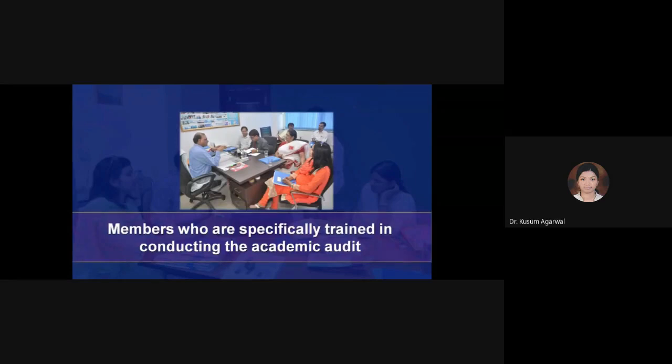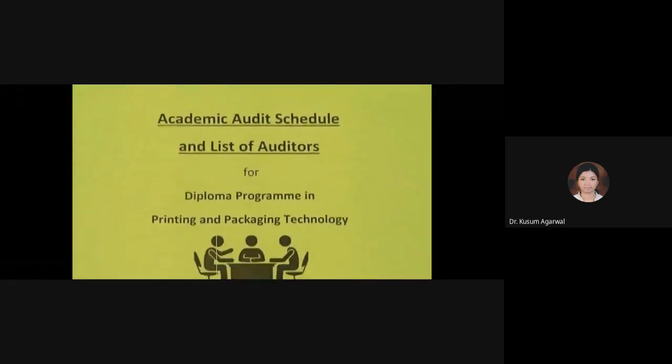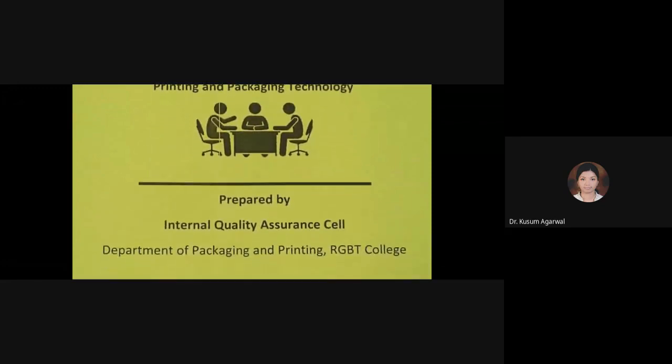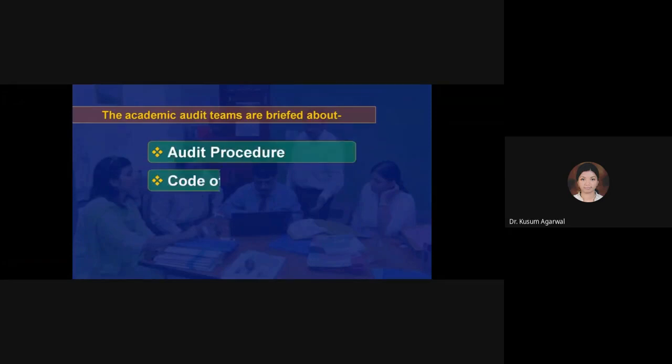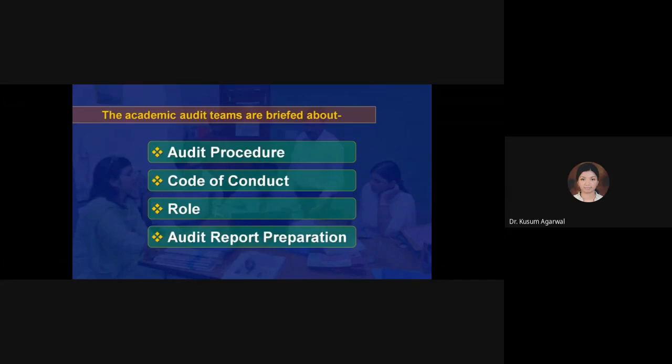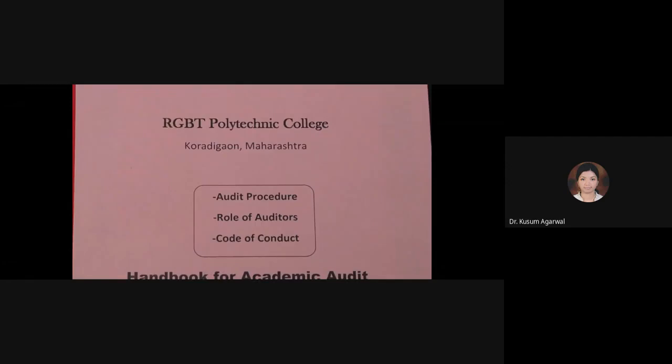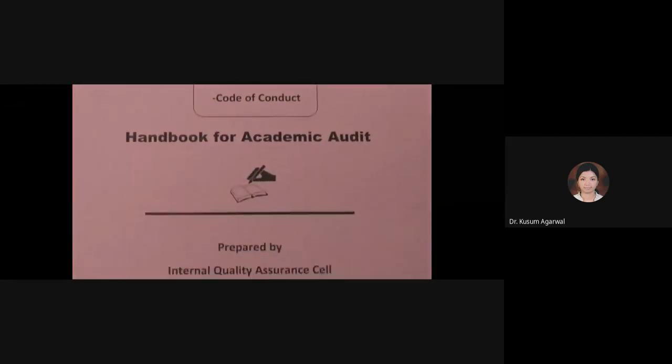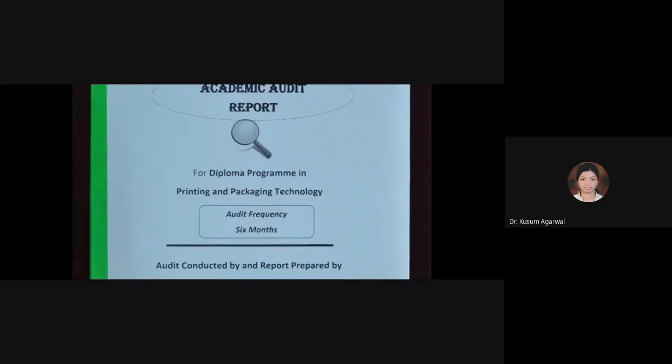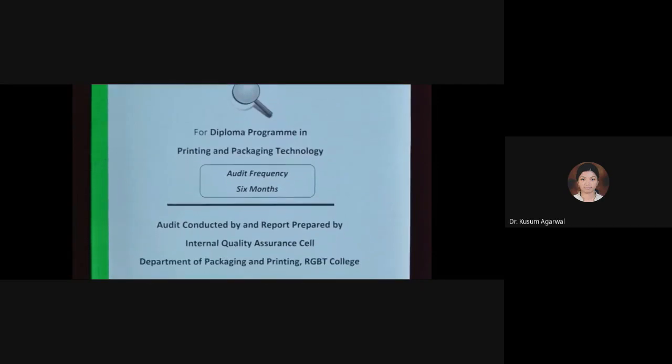Let's talk about the methodology of audit. The internal quality assurance cell may constitute a team of 2 to 3 members who are specially trained in conducting academic audit. The cell may declare the schedule for academic audit in the institute calendar. The detailed schedule is informed in advance to auditors and auditee. The academic audit teams are briefed about the audit procedure, code of conduct, role, and audit report preparation. The audit team conducts the audit against the given criteria and notes down observations in the given format.